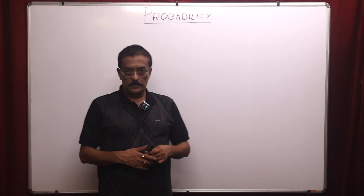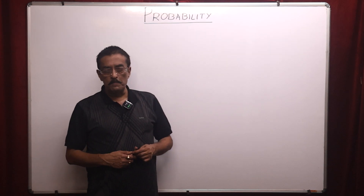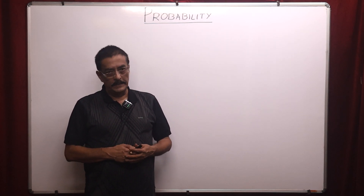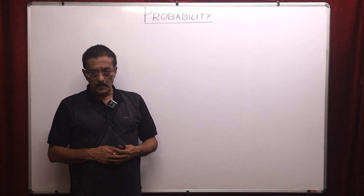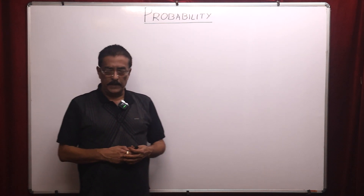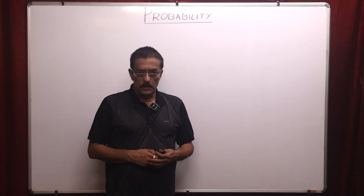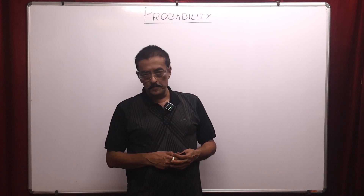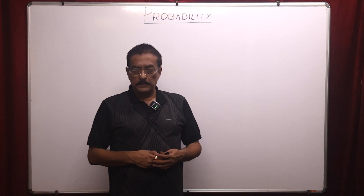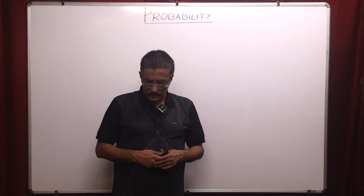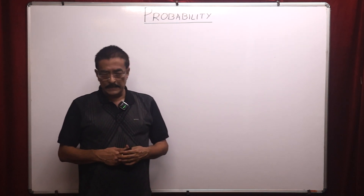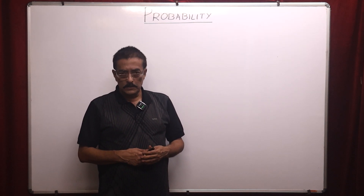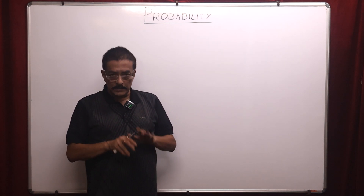Today I will discuss the most important chapter. The chapter name is Probability. Probability is a chapter which is important for all examinations — for placement, for corporate, for GATE, CAD, GRE, GMAT. Now probability, the first type is called general probability.